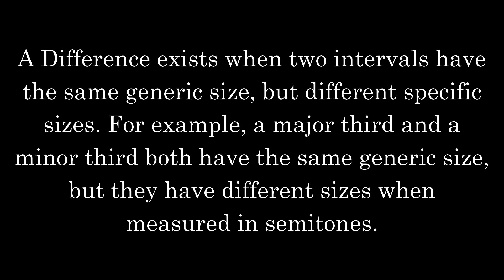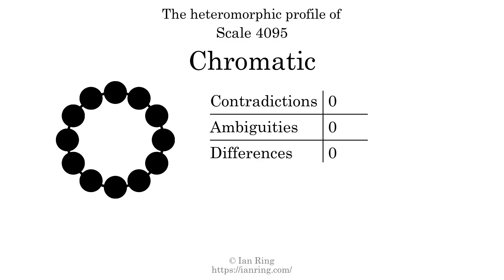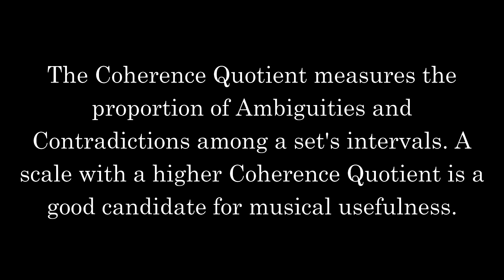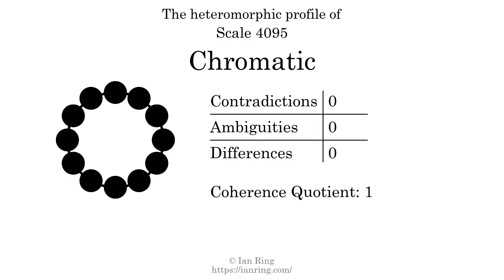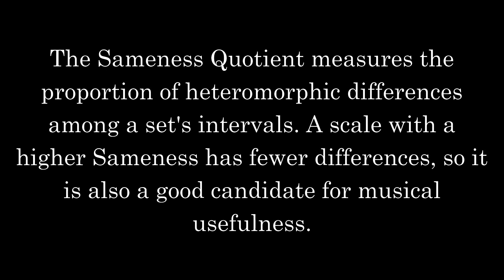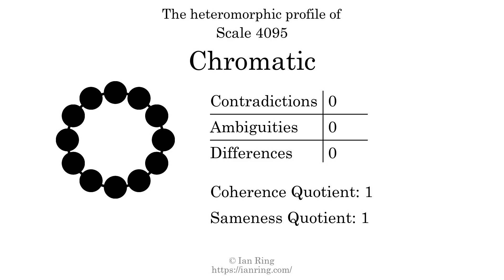A difference exists when two intervals have the same generic size but different specific sizes. For example, a major third and a minor third both have the same generic size but different sizes when measured in semitones. The number of differences in this scale is zero. The coherence quotient measures the proportion of ambiguities and contradictions among a set's intervals. A scale with a higher coherence quotient is a good candidate for musical usefulness. The coherence quotient is one. The sameness quotient measures the proportion of heteromorphic differences. A higher sameness quotient indicates fewer differences, also a good candidate for musical usefulness. The sameness quotient is one.